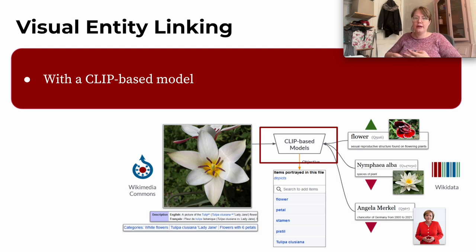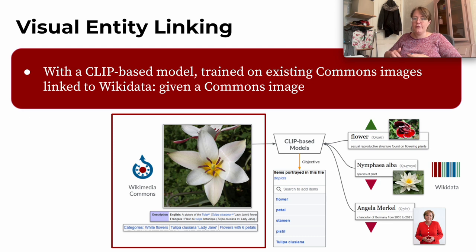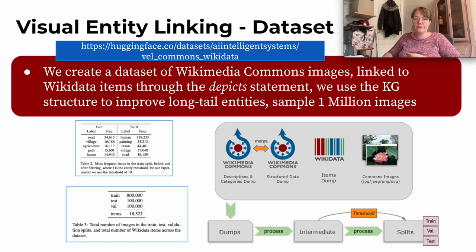Specifically, what our approach entails is a CLIP-based model that is trained on existing Commons images linked to Wikidata. Given a Commons image, we would be able to predict new structured data — new depict statements for a given image — recognizing things that are on an image and then creating new links to the Wikidata knowledge graph. We also create a publicly available dataset of Wikimedia Commons images linked to Wikidata items through the depict statement.